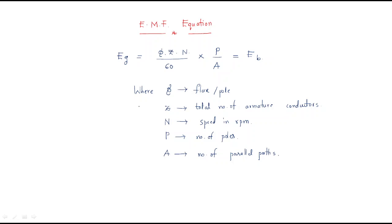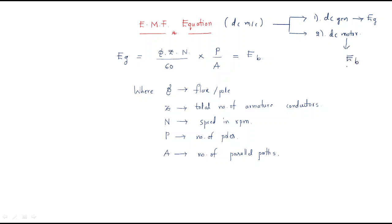In this session we will discuss the EMF equation of the DC machine. DC machines are of two types: DC generator and DC motor. In both cases the EMF equation is required. In the DC generator, the intention is to generate EMF. In the DC motor, back EMF is generated in the conductors due to the generating action.